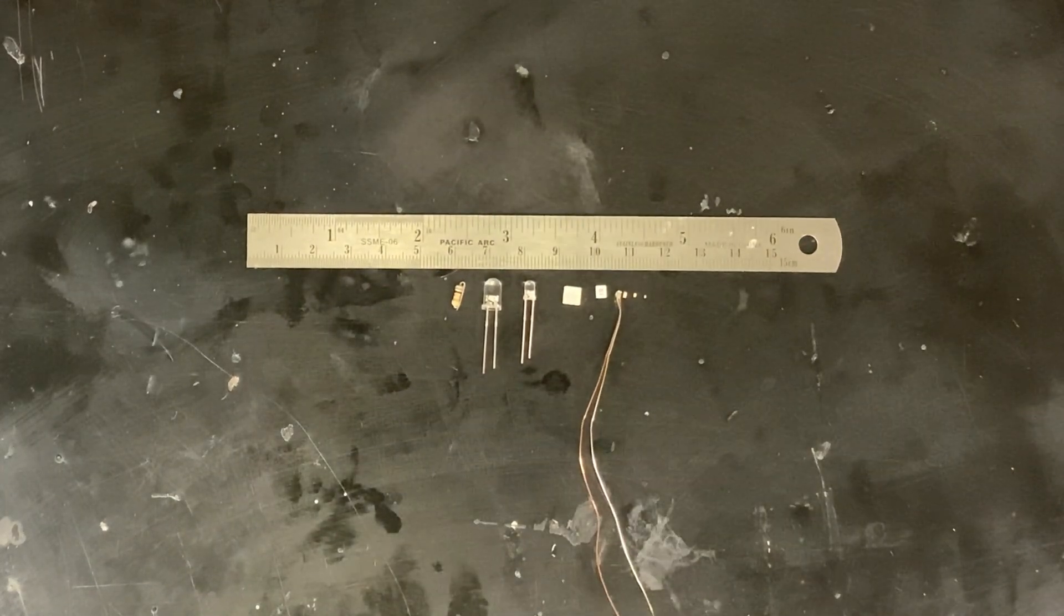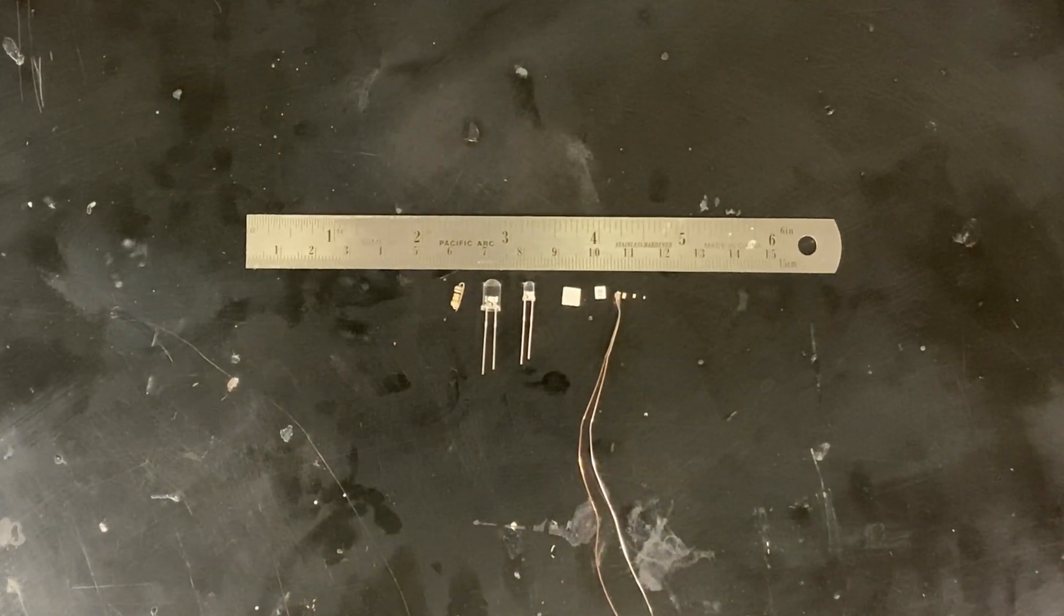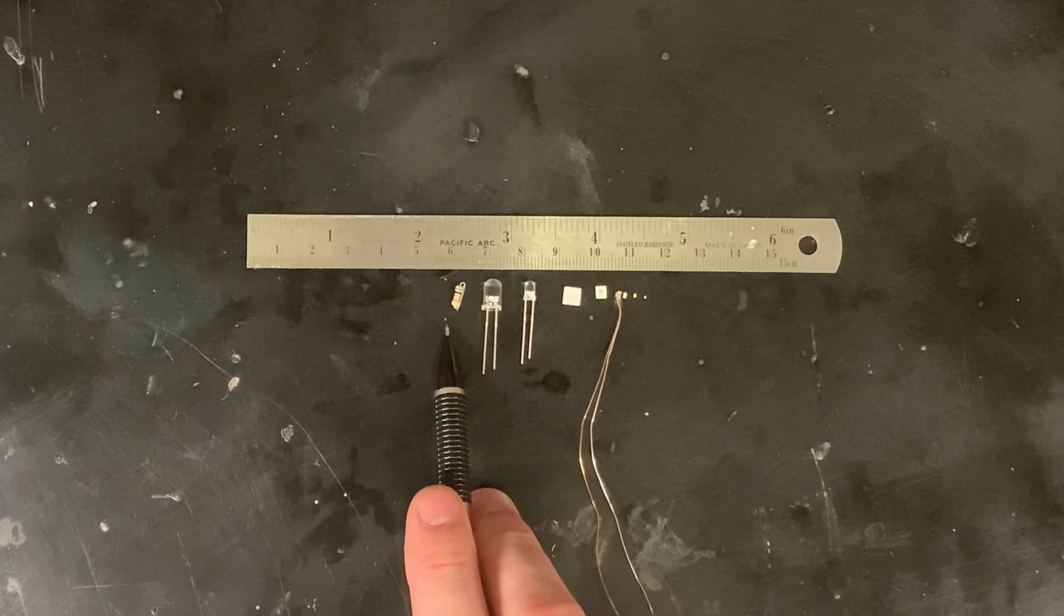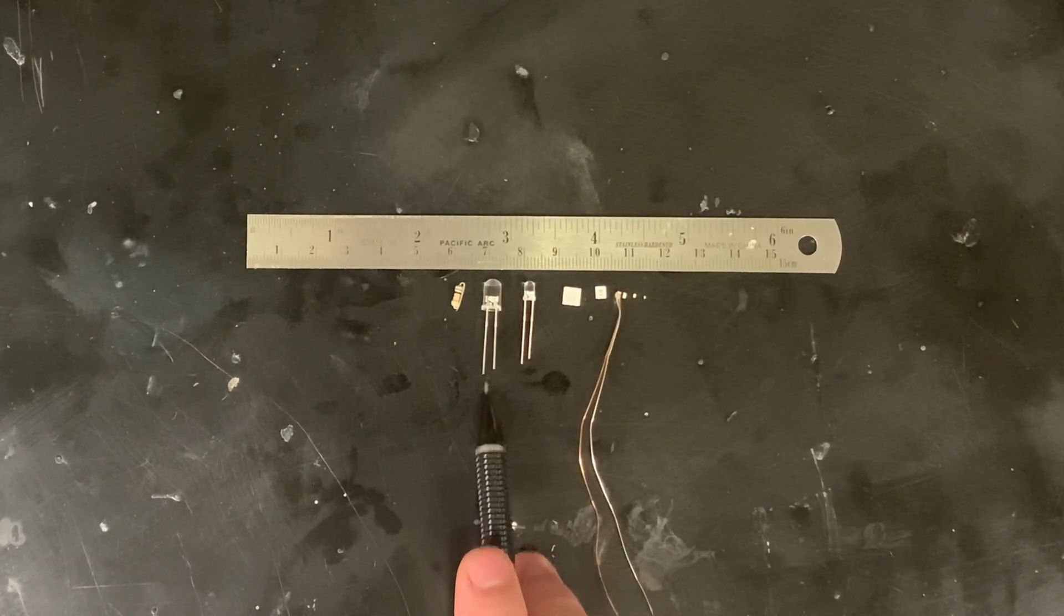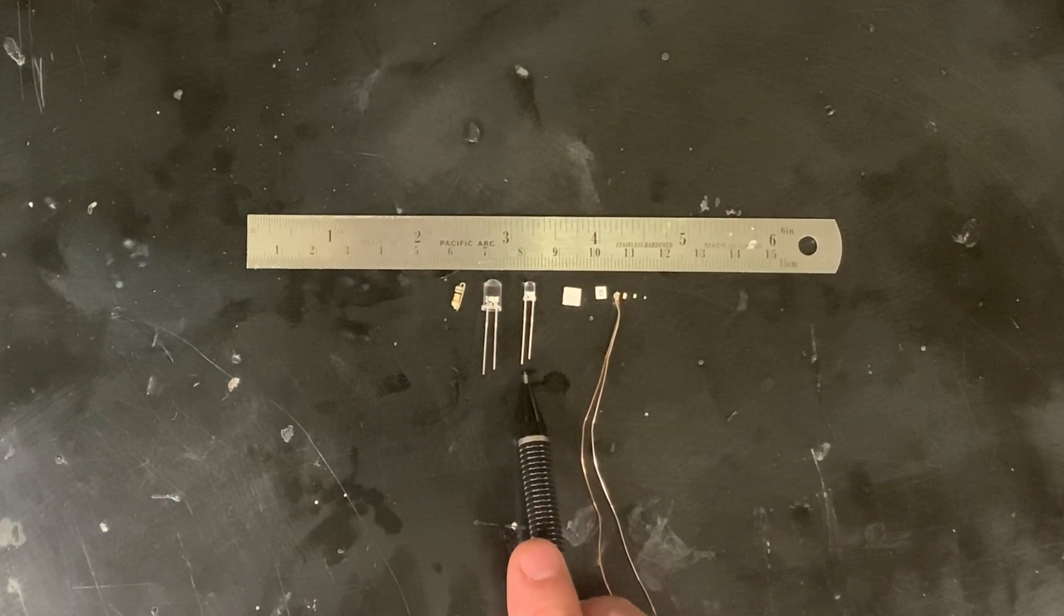Nice. So here's an assortment of LEDs that I have, just to show you what there is. Here's a quarter watt resistor. This is a five millimeter through-hole, a three millimeter through-hole,